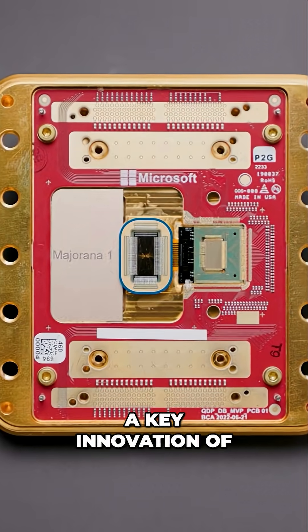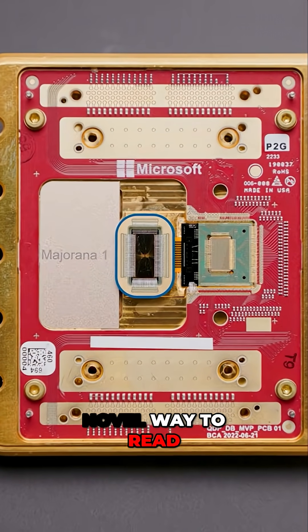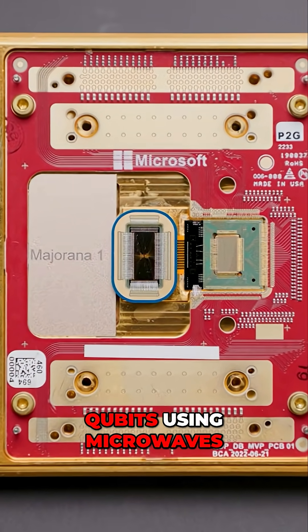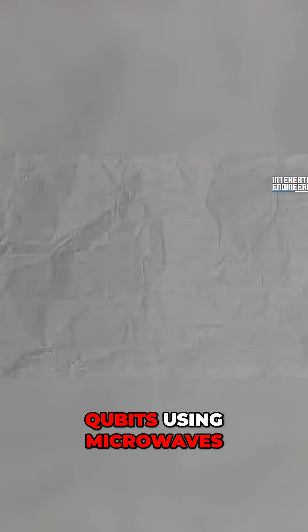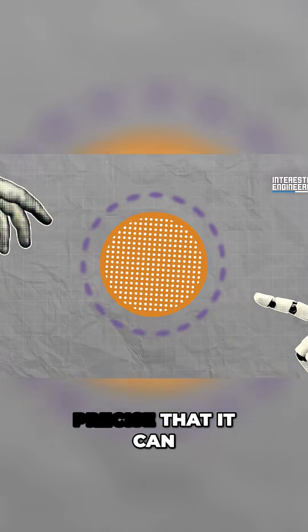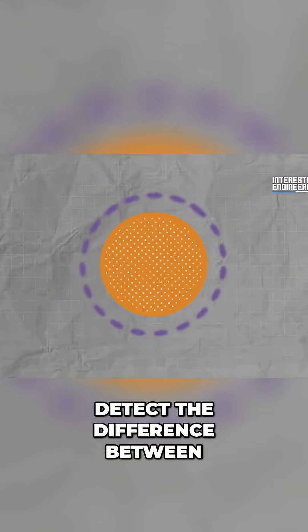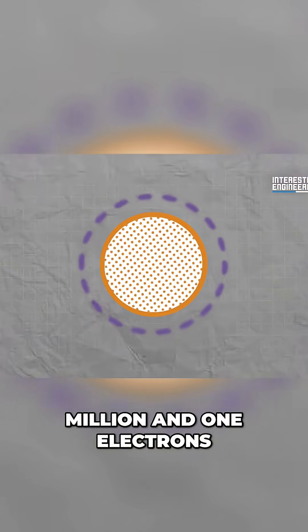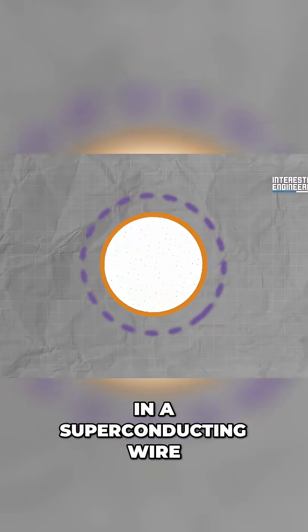A key innovation of Microsoft's approach is a novel way to read qubits using microwaves. This method is so precise that it can detect the difference between 10 million and 10 million and 1 electrons in a superconducting wire.